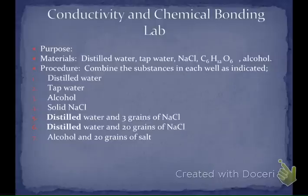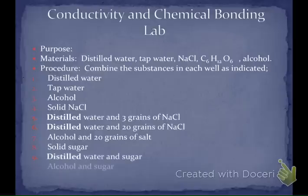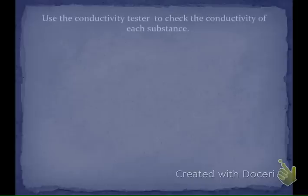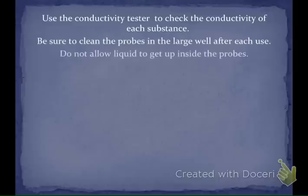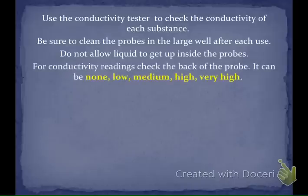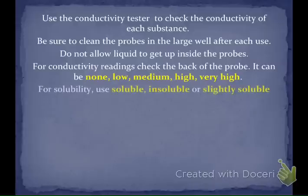Well seven: alcohol and 20 grains of salt. Well eight: solid sugar. Well nine: distilled water and sugar. Well ten: alcohol and sugar. I'm going to give you the conductivity tester, and tomorrow in class I'll give you your data table. You're going to use the conductivity tester to check the conductivity of each one, using the terms low, medium, high, or very high. For solubility, we're going to use the terms soluble, insoluble, or slightly soluble — you should know what those mean because we just talked about those in lecture.